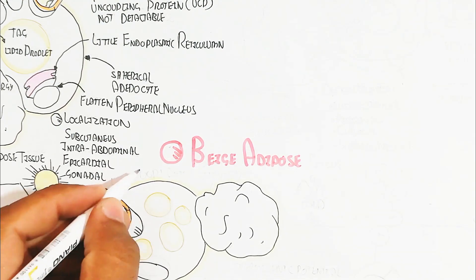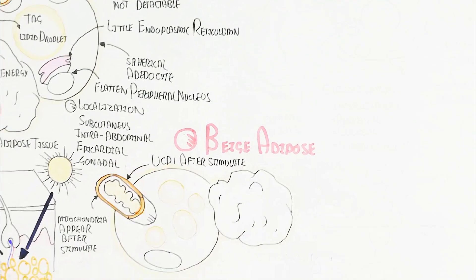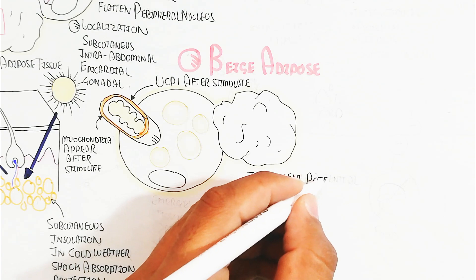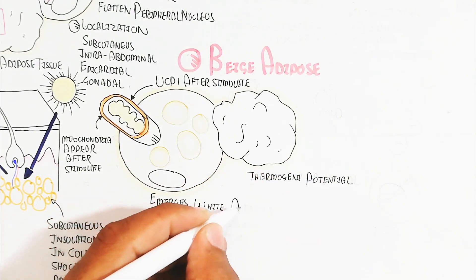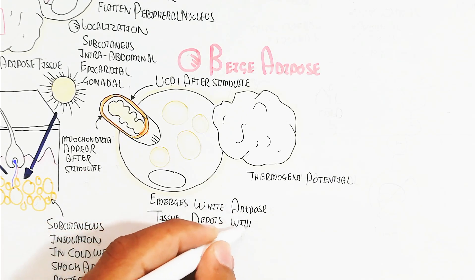So remember that. And in this way, the white adipose tissue will not contain UCP-1. So in this way, thermogenesis will not occur from the white adipose tissue. But beige adipose is the precursor of the thermogenic potential. So thermogenic potential is contained in beige adipose.